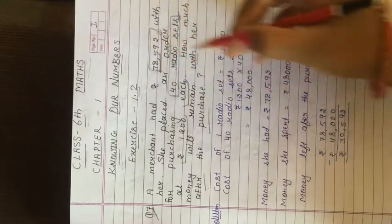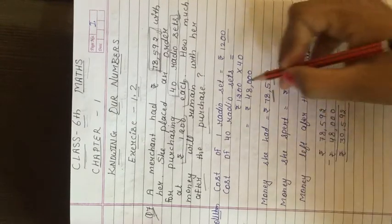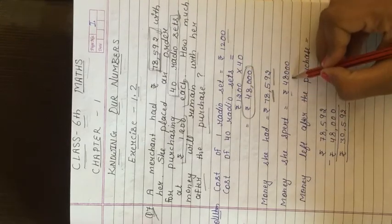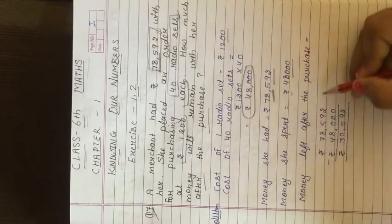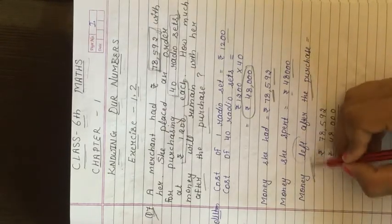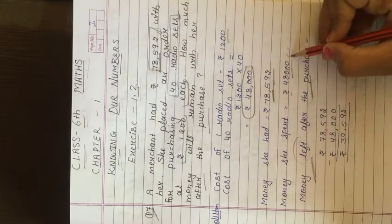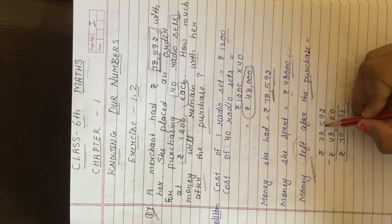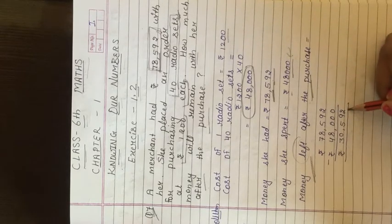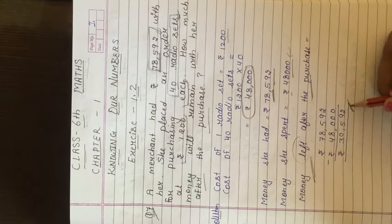Money she had, Rs. 78,592. Money she spent, Rs. 48,000. After she bought the radios, how much money remains? We will subtract. Total money remaining: 78,592 minus 48,000 equals 30,592.